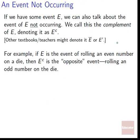What if an event doesn't occur? If we have some event E, we can also talk about the event of E not occurring. We call this the complement of E, denoted E^c. Other textbooks might use E with a bar on top or a tick mark — any of these notations is fine.